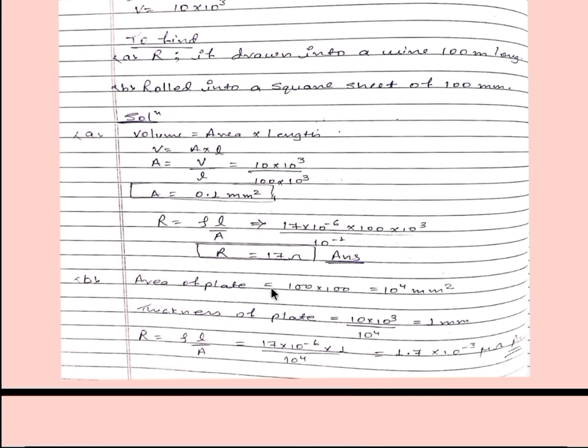Now part B, area of plate. We can calculate like it's a square so area will be 100 into 100, so 10 to the power 4 mm square will be the area of plate. Now thickness of plate will be total volume divided by area, so thickness we will get 1 mm. Again we will put in this formula R is equal to rho L by A. Rho is given, L we got from here and A is 10 to the power 4.